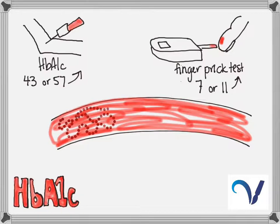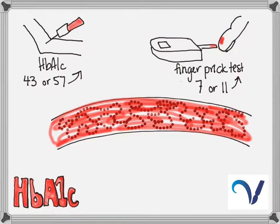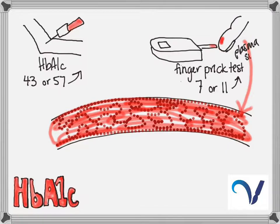Now your red cells float around in this plasma and they last for three months and so they will absorb whatever sugar they're floating around in over that time. So when we do this test, your finger prick test is a test of your plasma. So that's your plasma sugar. And your blood test, or the HbA1c, will test the cell. So that's your red cell sugar.